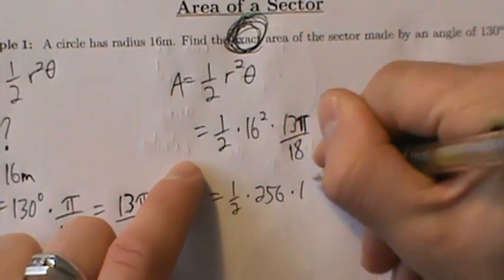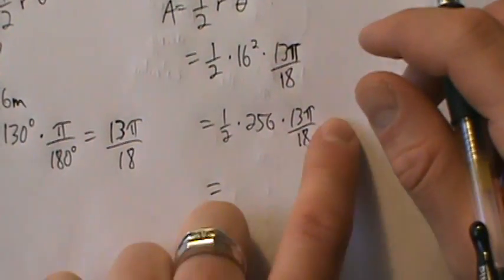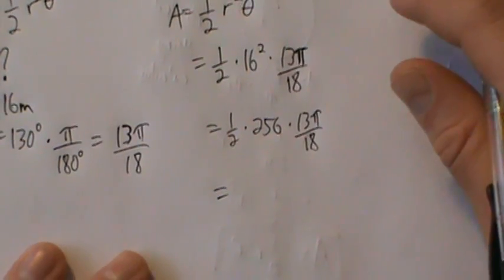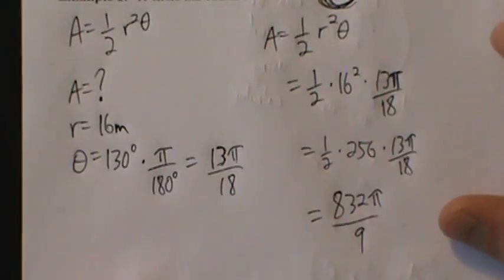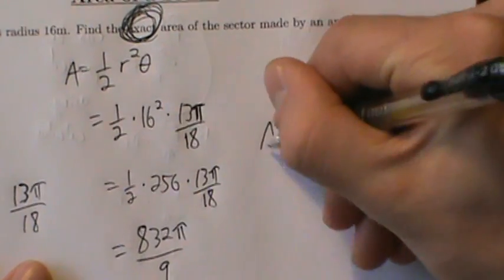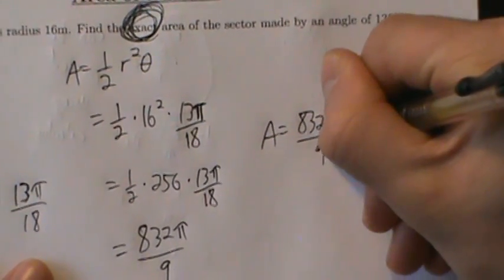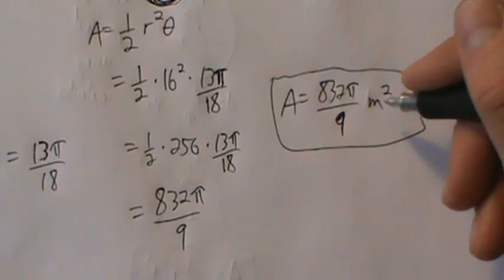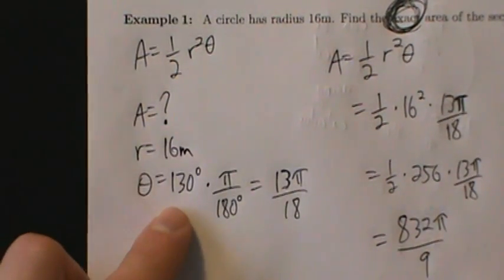16 squared is 256, so we have one-half times 256 times 13 pi over 18. You can use a calculator for the other numbers but make sure to leave pi in the end. When you simplify this, you get 832 pi over 9. Since r has units of meters, the area has units of meters squared. So the area equals 832 pi over 9 meters squared — that's the exact answer for example 1, just directly using the formula, remembering to convert theta to radians.